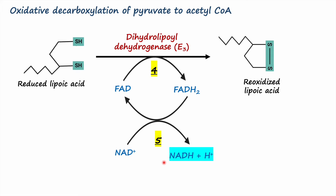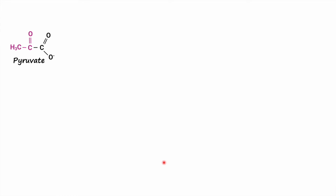One thing to remember: since one glucose molecule is broken down into two molecules of pyruvate, in this overall reaction two NADH molecules are generated and two acetyl-CoA molecules are synthesized. Once acetyl-CoA is synthesized, it enters the TCA cycle to synthesize ATP.